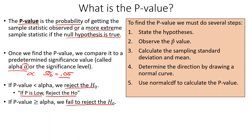Here is the process we follow to find the p-value. First, we state both hypotheses — the null hypothesis and the alternative hypothesis. Then we look at our data and write down our p-hat value, which is our sample proportion. Then we calculate the sampling standard deviation and the mean. The sampling mean will just be p, and the sampling standard deviation formula is on the next slide.